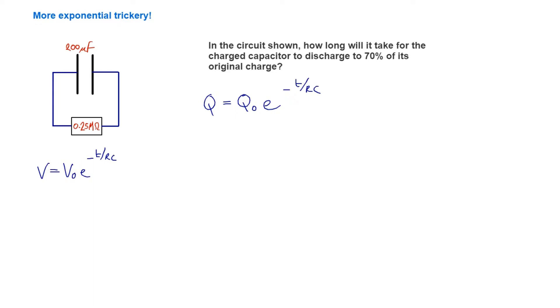We know we can find RC, because RC is the time constant, which we can use in our equation. That is going to be 2.5 × 10⁵ ohms, because it's 0.25 megaohms, multiplied by 200 microfarads.